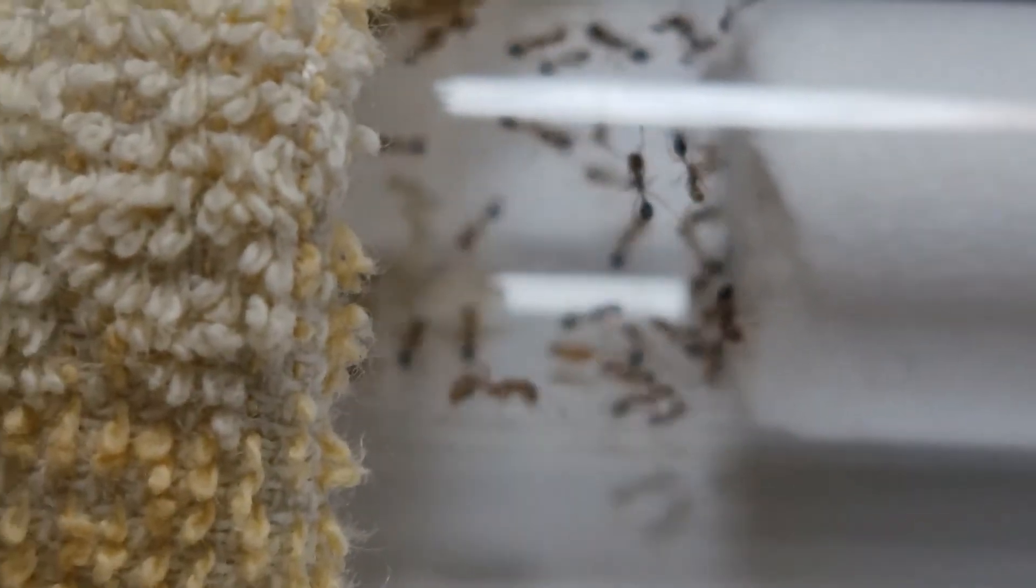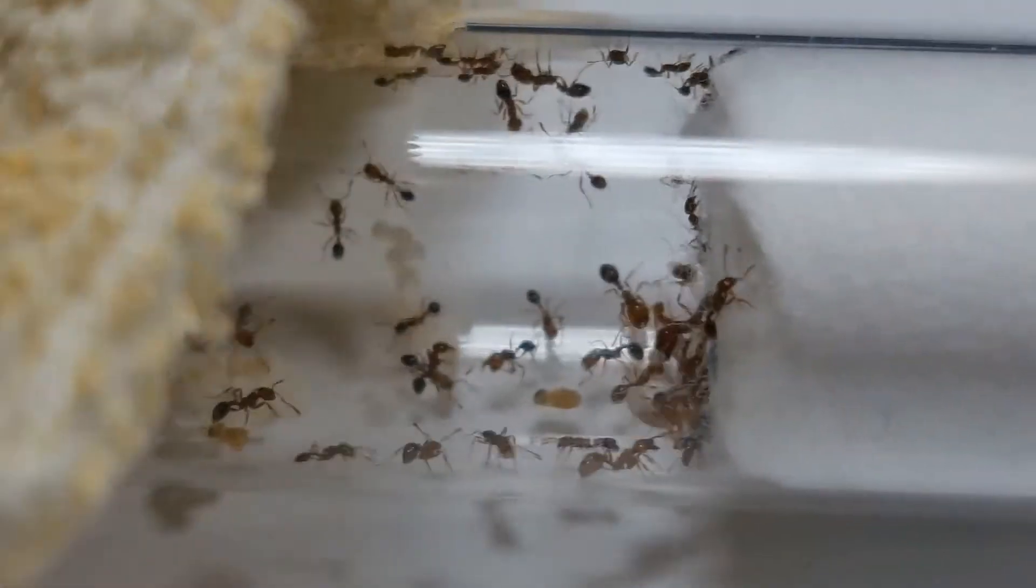The nest is starting to empty out after about 30 minutes. Most of the broods and the queen have already moved in. We are about to remove the test tube and plug it with cotton.